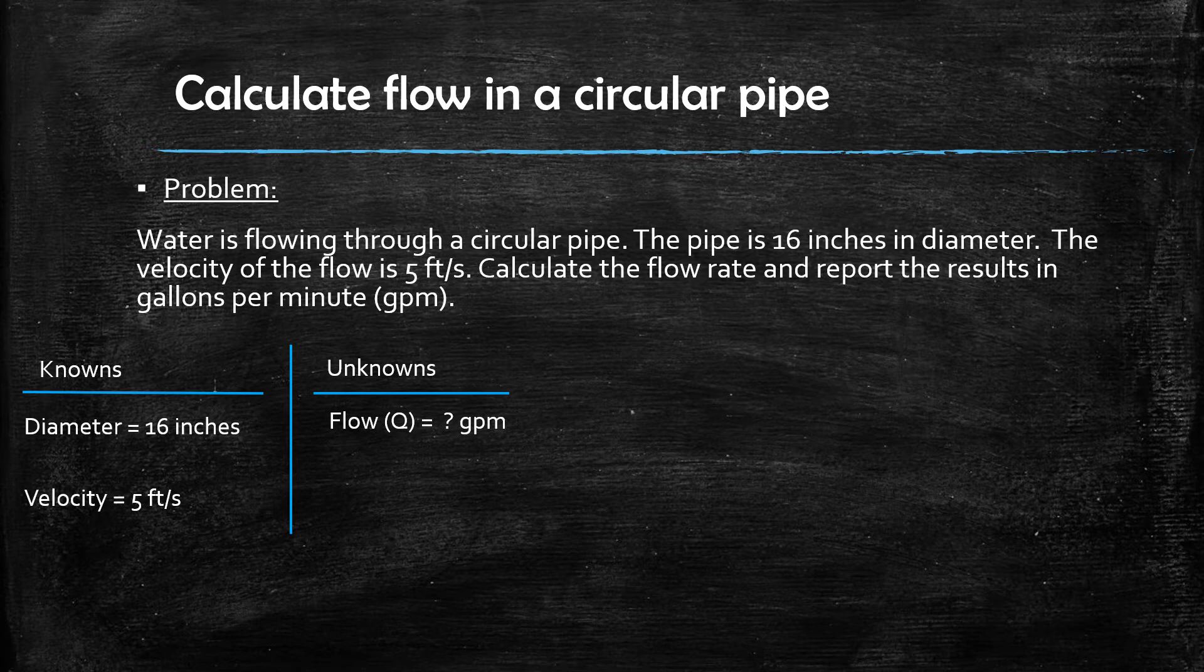Let's pause for a second and talk about units. In this problem the known values have been given to us in a mixture of units. The diameter is in inches and the velocity is in feet per second. All the known values must be in a common unit of measure like feet before you can use the flow rate formula.